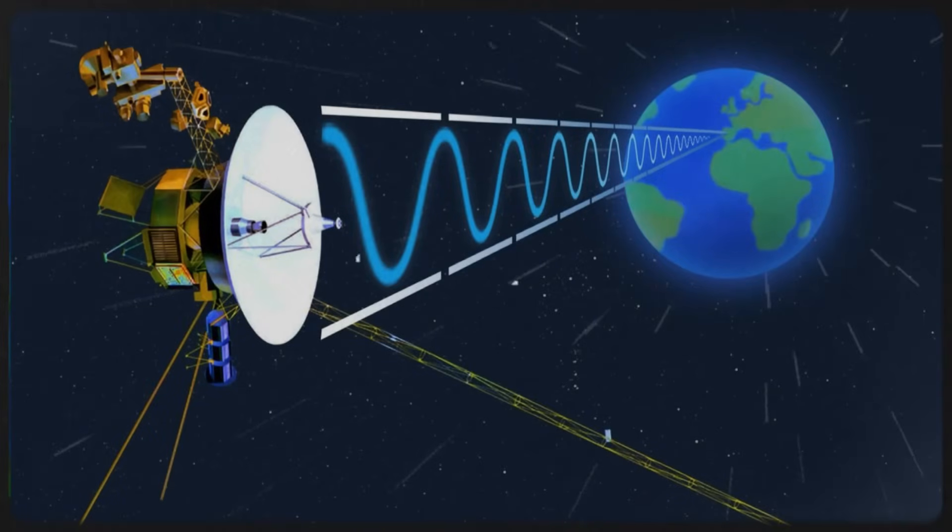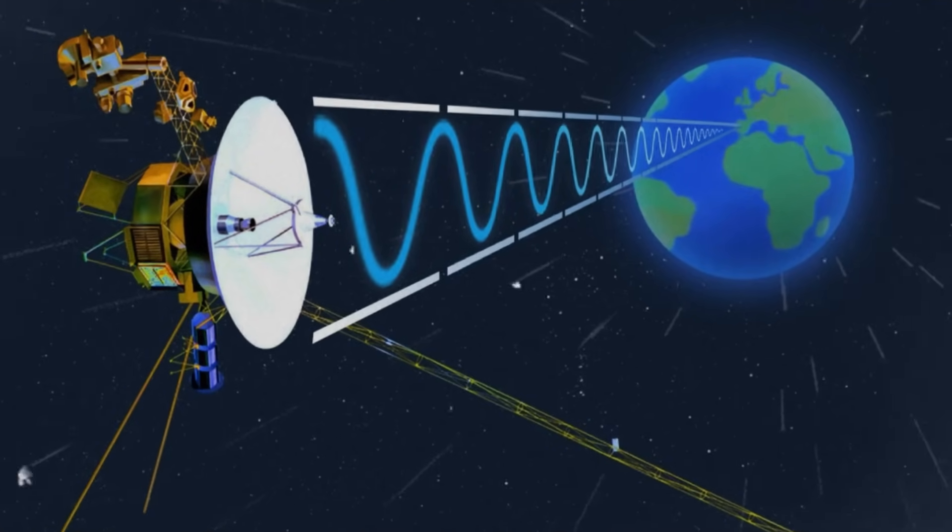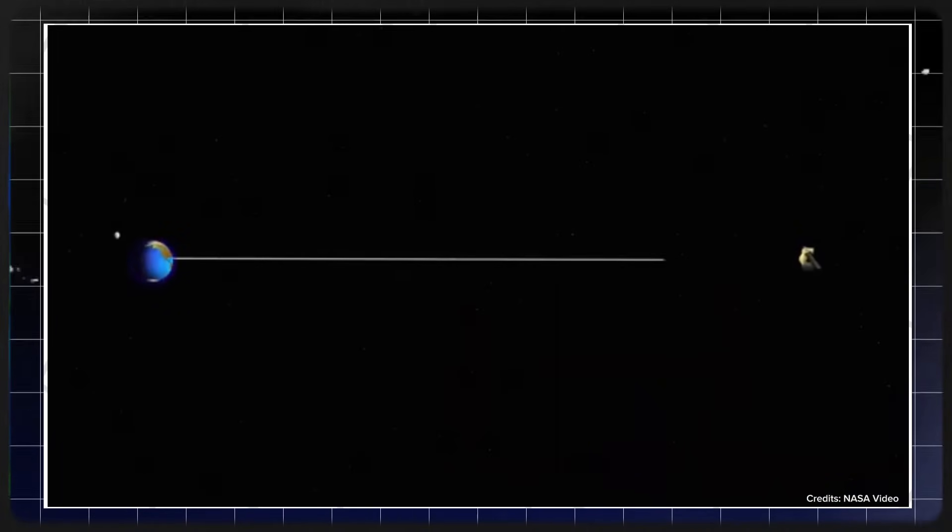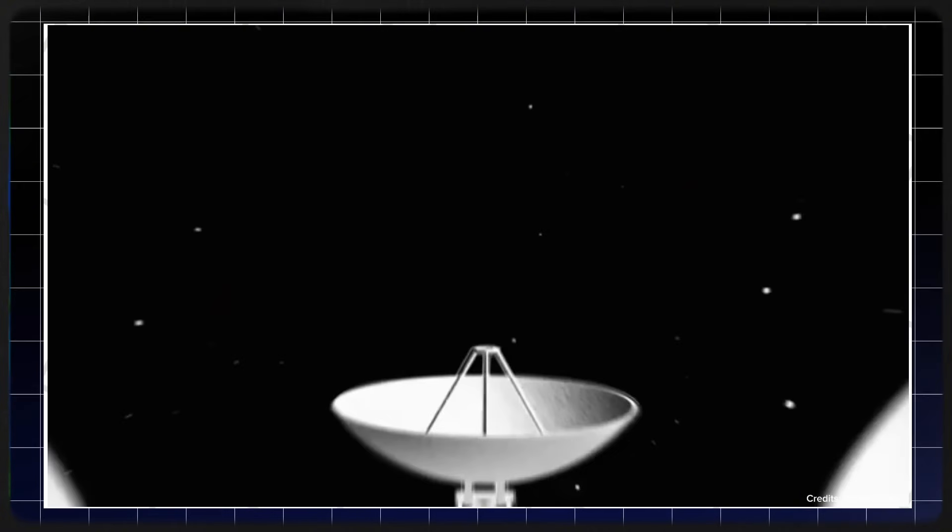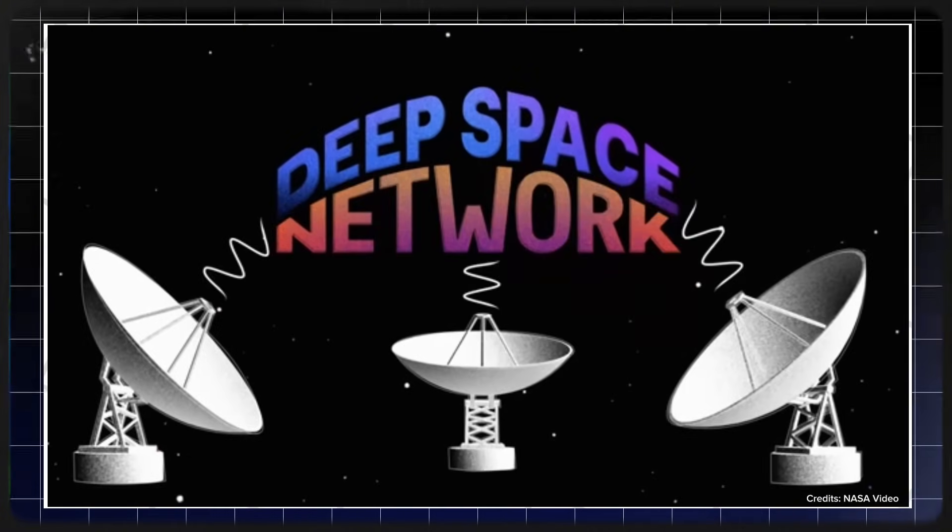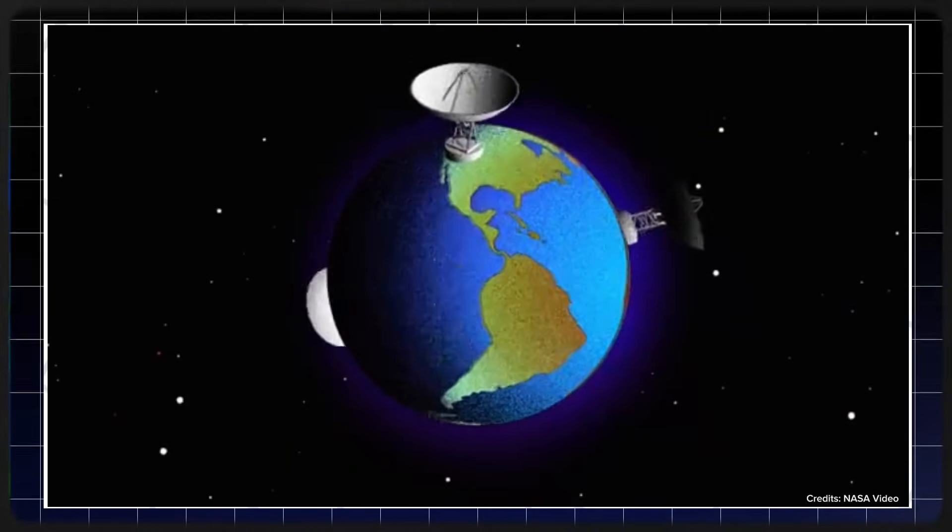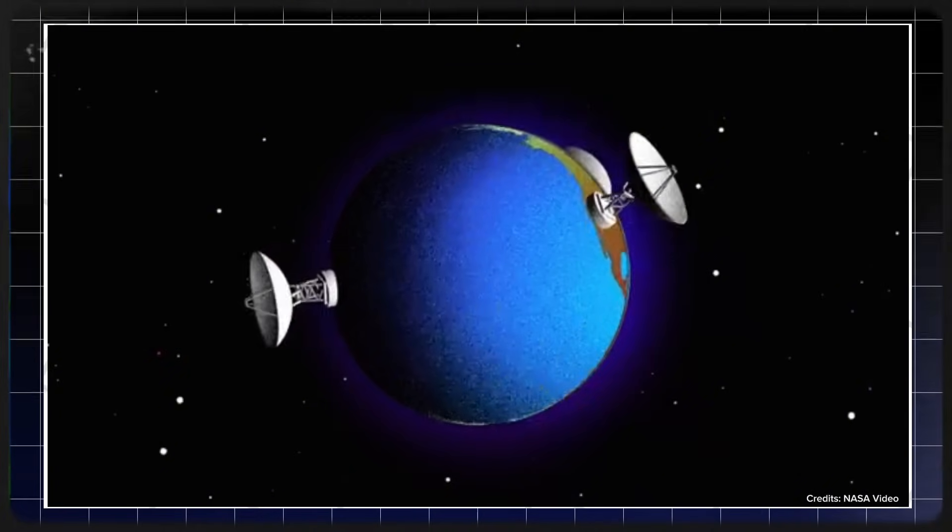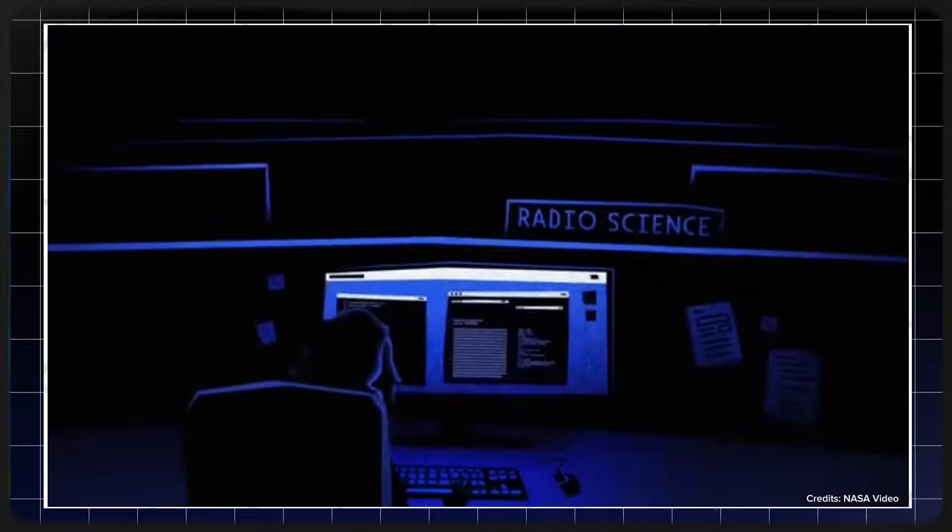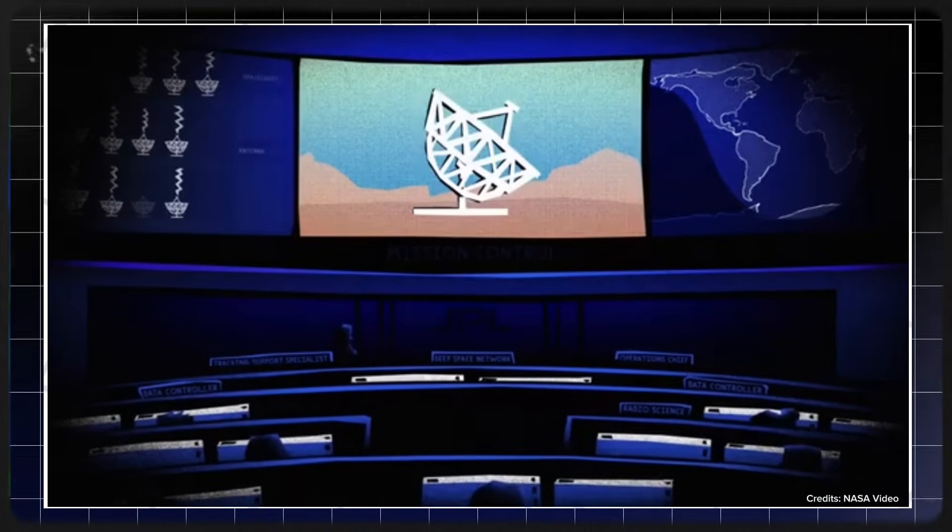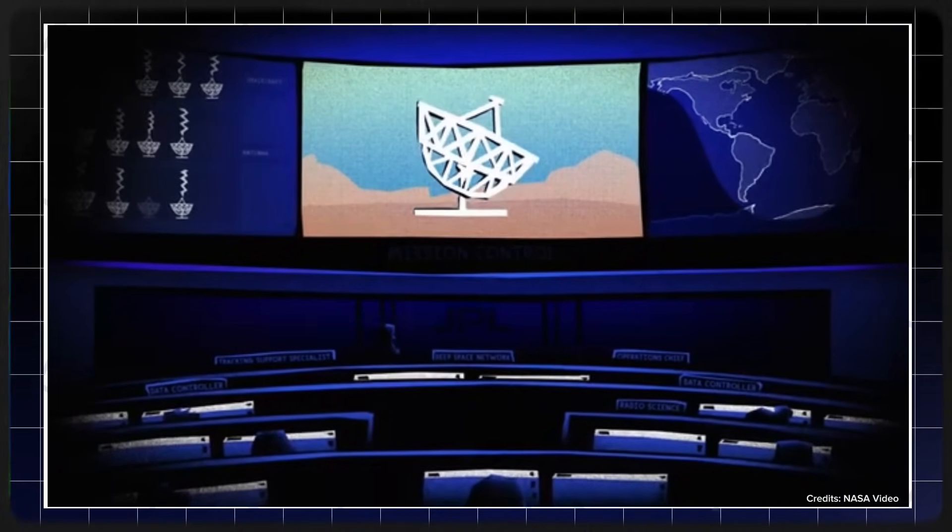At that distance, even under the best conditions, signals take nearly 23 hours to travel one way, meaning that every command sent and every response received came with a significant delay. The situation required a careful and measured response. The Deep Space Network, a globally distributed network of large radio antennas used by NASA to communicate with distant spacecraft, was immediately tasked with adapting to the new communication requirements. The DSN's antennas were reconfigured to detect the faint S-band signal, a process that demanded precise adjustments.